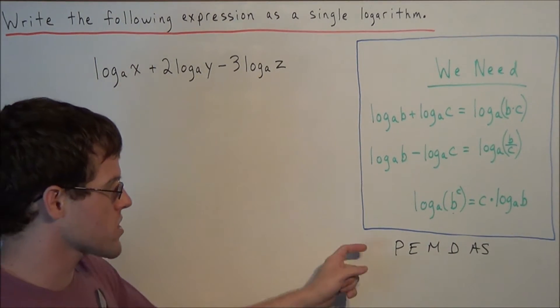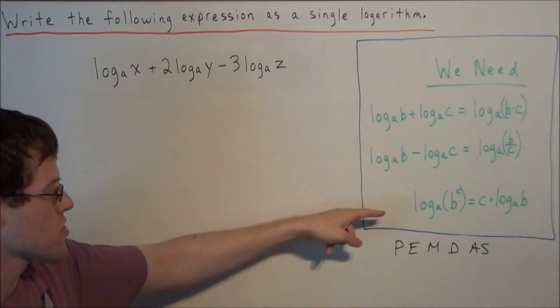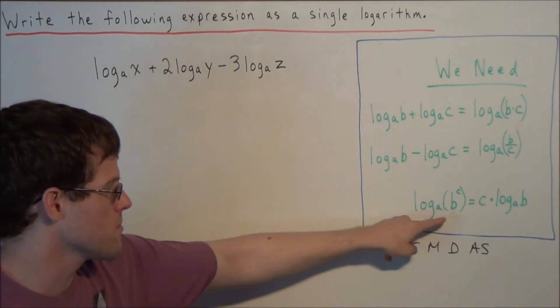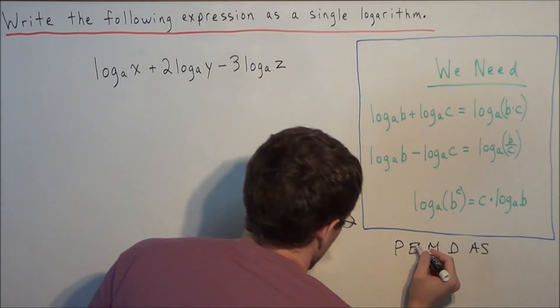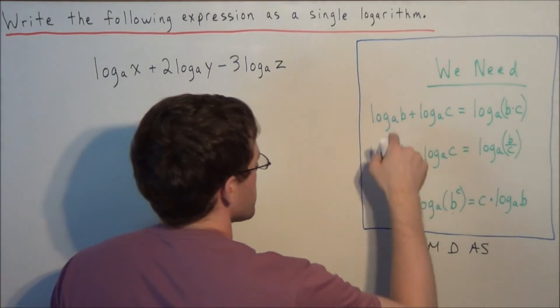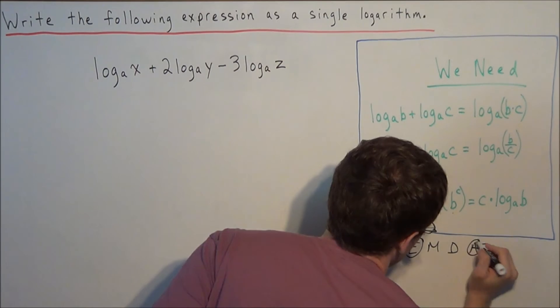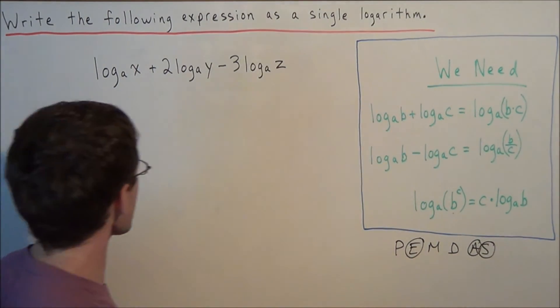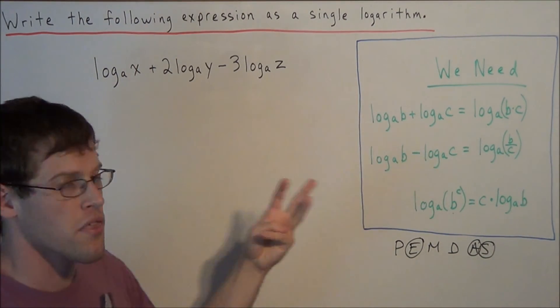And that's the order in which I like to carry out these log properties. So the first one I want to use that's going to come in the list is the exponent property of logs. Then we want to use the addition property of logs and subtraction. Because notice in this problem, those are the three that we could use.